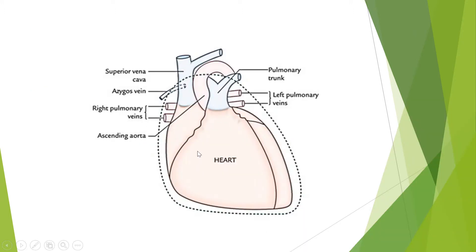First of all, I want to describe the main vessels of the heart. This is the heart, and these are the pericardial membranes enclosing the heart. Number one is the superior vena cava, the great vein of our body. The superior vena cava carries deoxygenated blood from the upper part of the body into the right atrium of the heart. Similarly, there is the inferior vena cava, which drains deoxygenated blood from the lower part of the body into the right atrium.